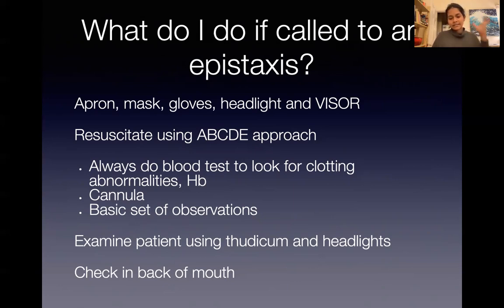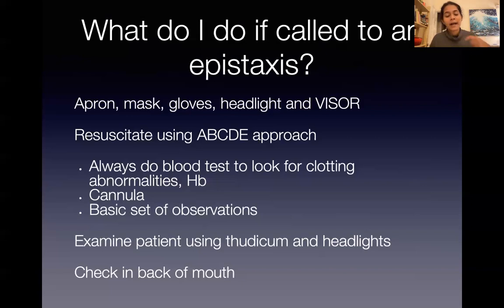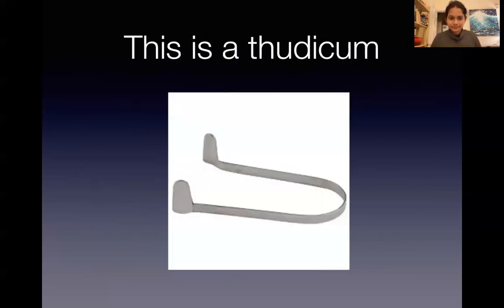ENT examination-wise, I'd use a thudicum speculum and headlight to have a look up the nose to see if I can identify any area where the bleeding is coming from. I would also check the back of their mouth to see if blood is trickling down the back and assess how severe it is. A thudicum is a metal instrument used to part the nostrils so you can get a better look up a patient's nose.